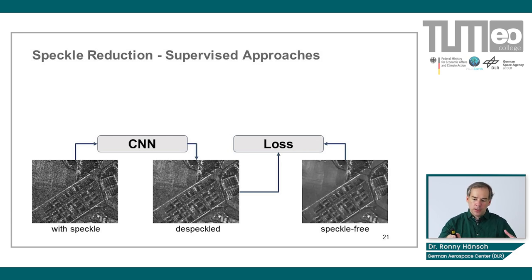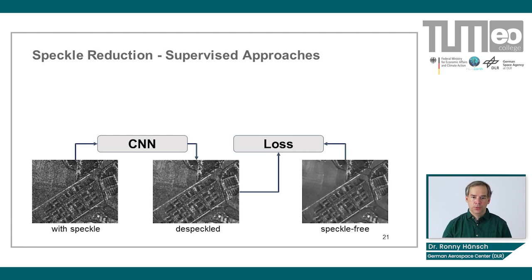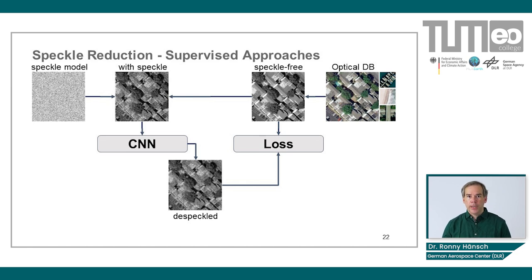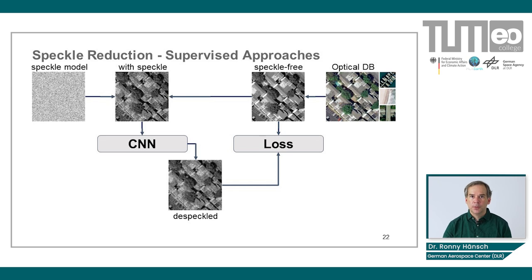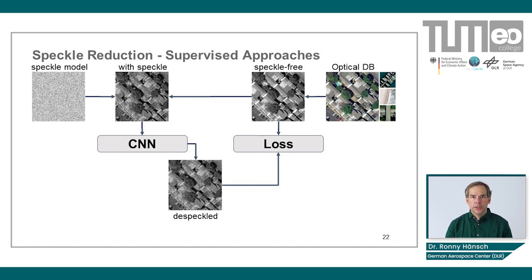We have a SAR image with really strong speckle, seen here in the bottom left corner. We want to put this into a convolutional neural network that produces the same image but speckle-free. Traditionally, you would have the desired target variable — the same image without speckle. You put the speckled input image into the neural network, it does some processing, hopefully creating an image with less speckle. You compare this output with the speckle-free image via a loss function, and the loss is back-propagated through the network to adjust its parameters.